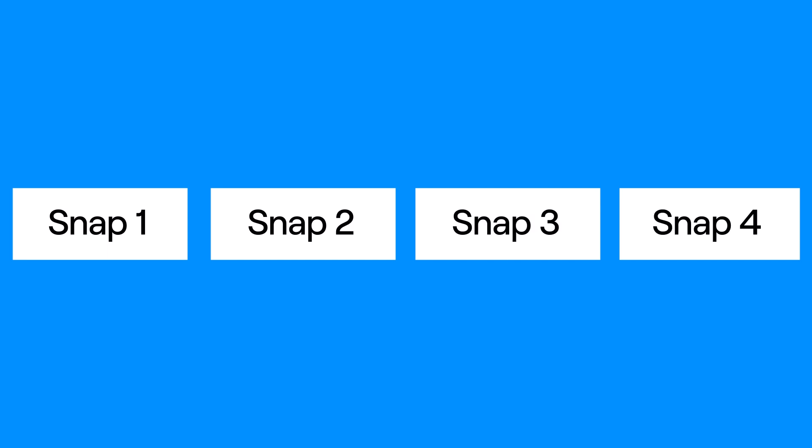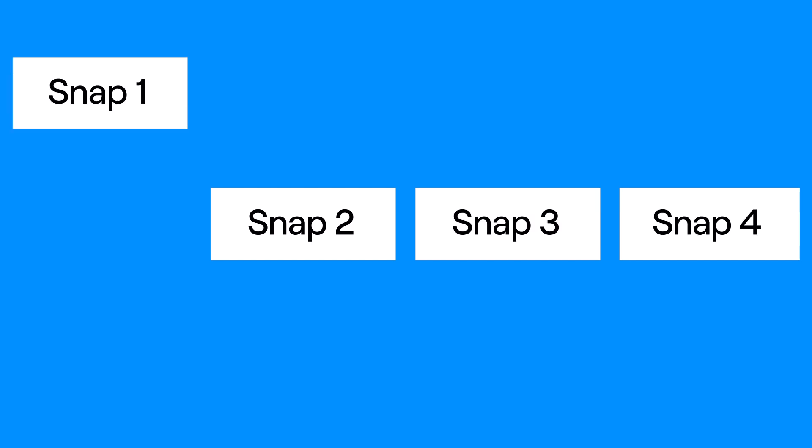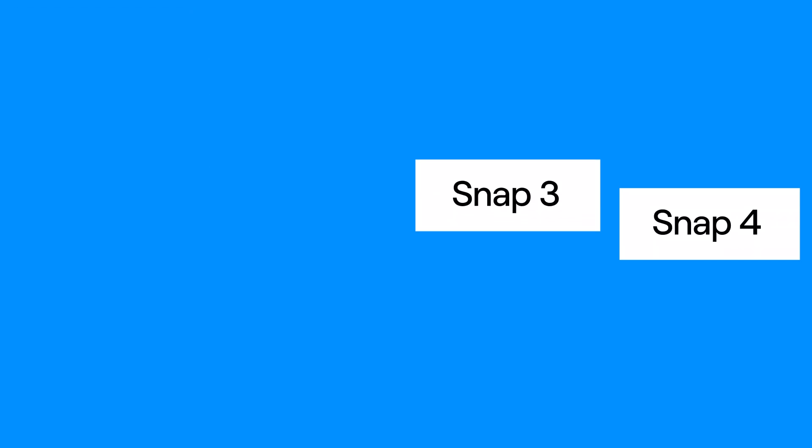First, you'll need to record a video of yourself walking through a space and snapping your fingers every time you want to transform yourself. Then you'll want to cut up the original video clip so that each snap becomes its own file. This will help us later when it comes time to generate different styles.